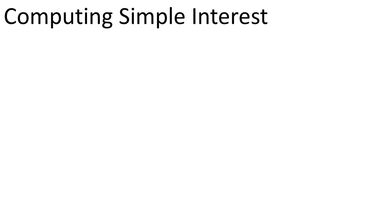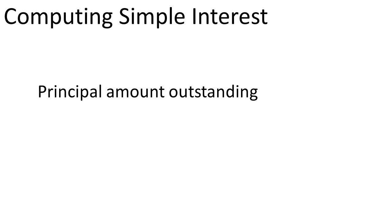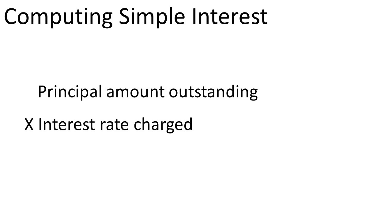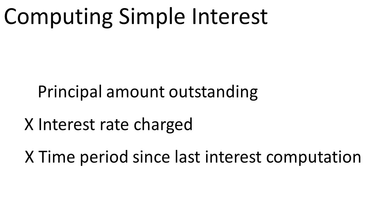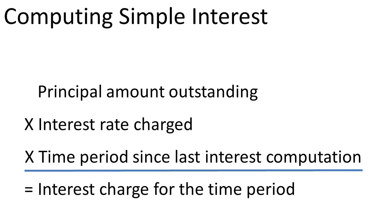In a later module, we will dig deeper into the computation of interest, but here is the basic formula for computing simple interest on a loan. You take the principal amount outstanding, multiply by the interest rate charged, which is usually quoted as an annual rate, then multiply by the time period since the last interest computation, and you will arrive at the interest charged for the period involved.